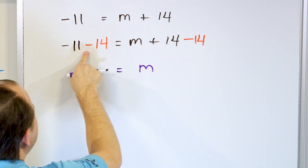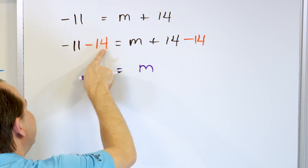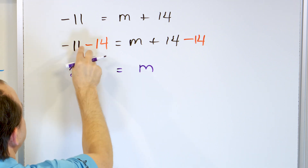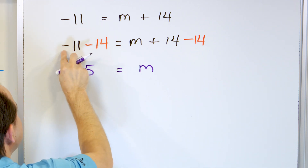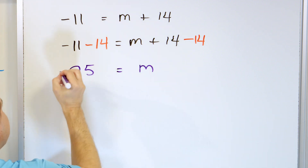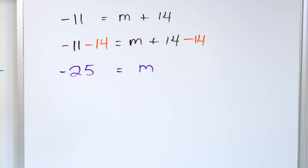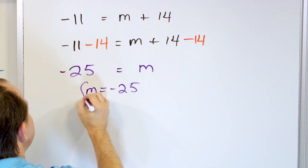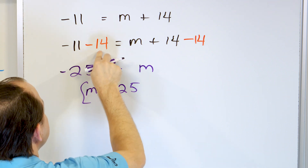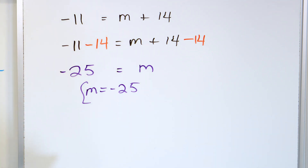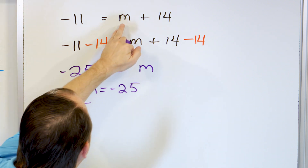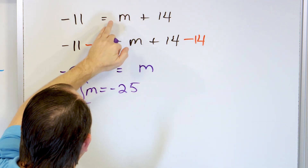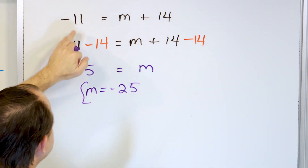What is negative 11 minus 14? You start out at a negative and you go deeper negative, so we essentially add these: 1 plus 1 is 2, and 1 plus 4 is 5, so it's 25. But since negative and then subtracting more gives a deeper negative, it's really negative 25. So we can flip it around and say m is negative 25. You can also think of it as negative 11 plus negative 14, and you'll get negative 25. Stick negative 25 in, and you'll get negative 11 as a check.